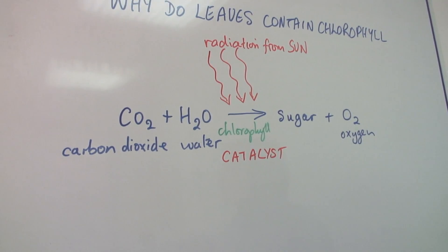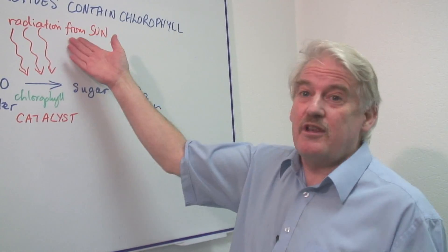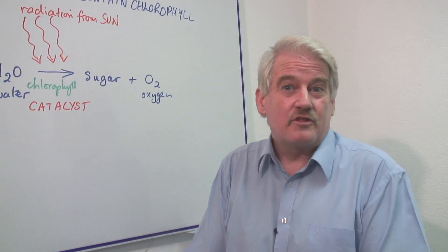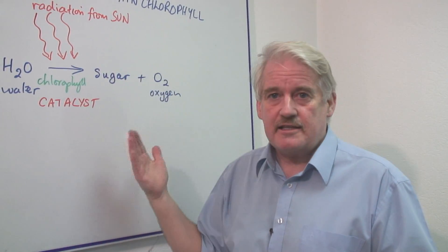If you look at the root of a plant, it is white. It doesn't contain chlorophyll. There is no light down under the ground. So what's the point of having chlorophyll to help this reaction to go? There's no light to help it.